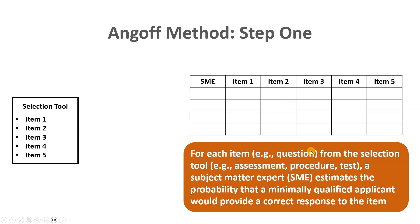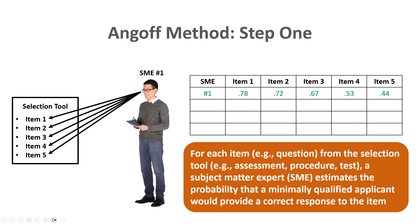Here you can see a data table we're going to populate. The first column is the subject matter expert's unique identifier, and the remaining five columns are each of the five items. Subject matter expert number one gives the following estimated probabilities that a minimally qualified applicant would answer each item correctly: 0.78, 0.72, 0.67, 0.53, and 0.44 for items one through five respectively.